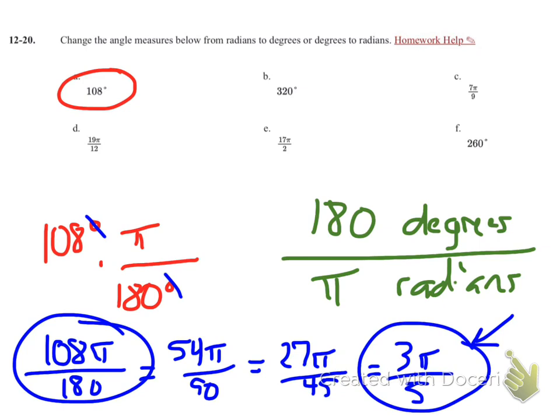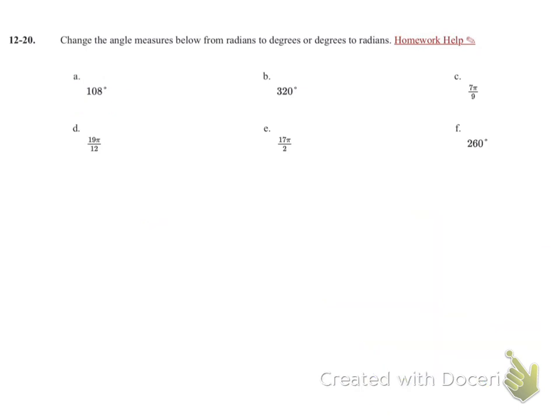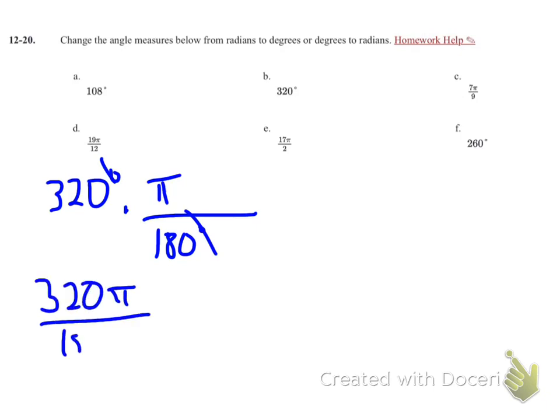Let's look at problem B. If I have 320 degrees, I'm going to multiply it by again. I'm going to put the 180 degrees in the denominator, so the degrees will cancel. This means I have pi in the numerator. So now I have 320 pi over 180.